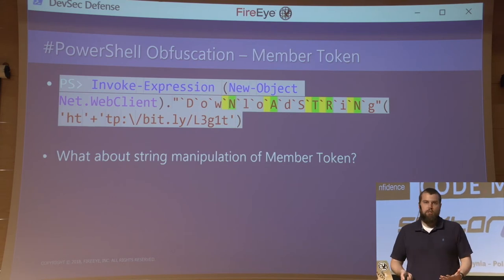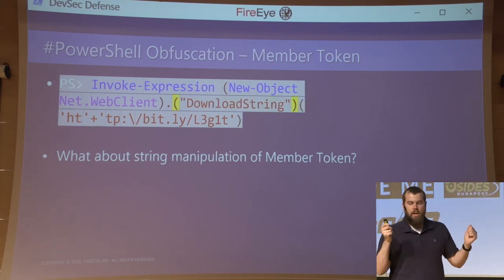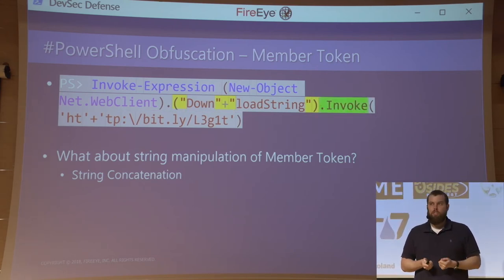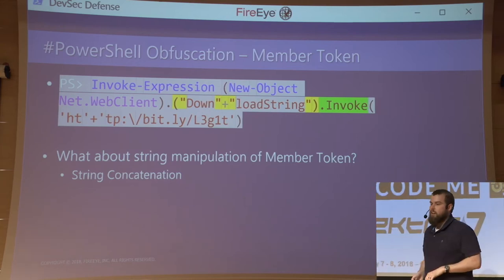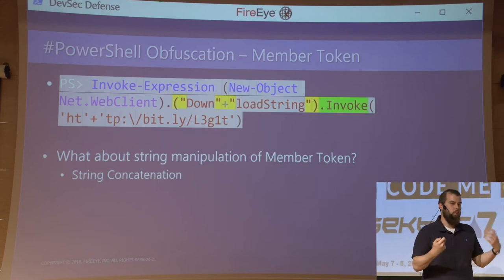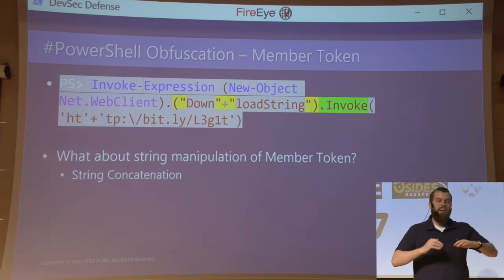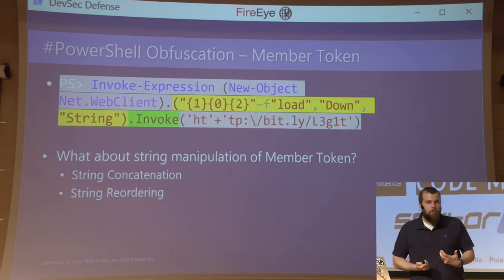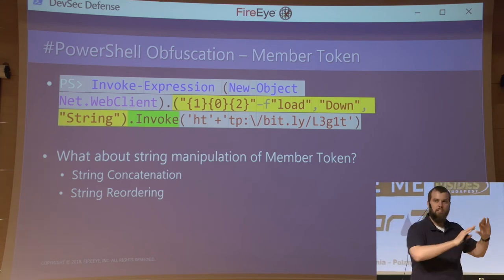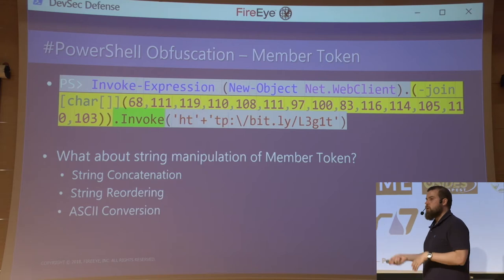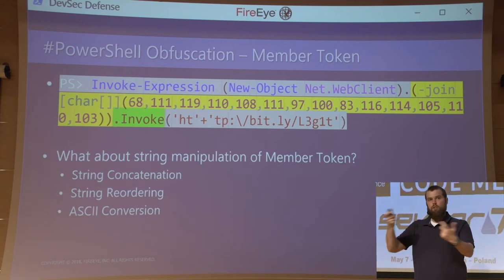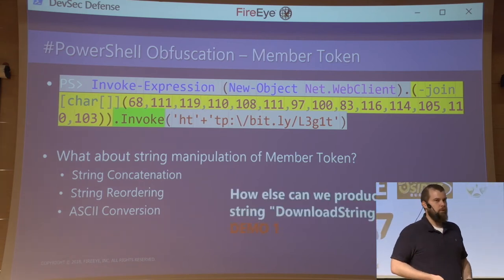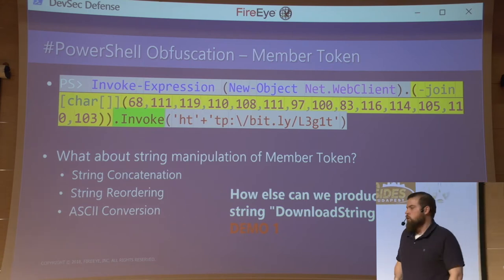What if we wanted to treat this truly as a string? All we have to do is encapsulate it with parentheses and concatenate it like a string. In PowerShell 2 you need to add a .invoke member, but PowerShell 3 or later doesn't need it — you can have whitespace in that location. We can concatenate it, we can use the dash-F format operator and start to reorder the string. We could even go a step further and have an array of ASCII character values and then convert it back in memory — and that's download string now. So how else can we produce the string 'download string'?